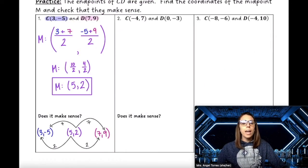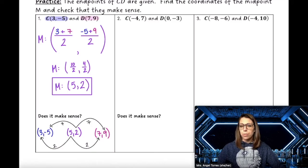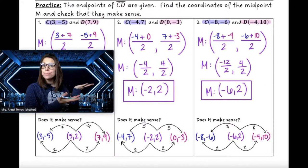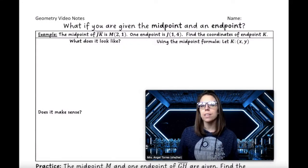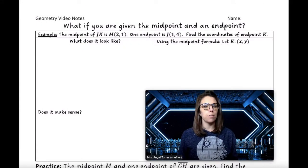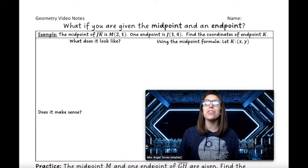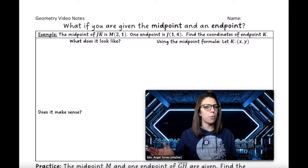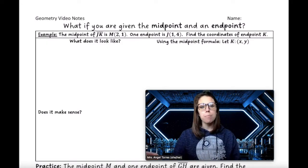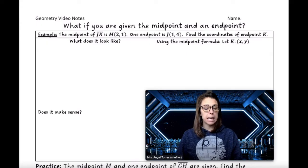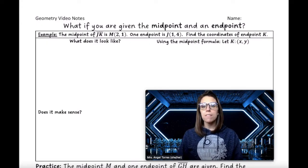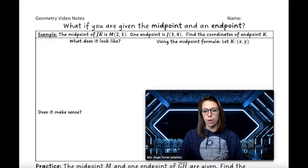Alright, it's your turn — go ahead and find the coordinates of midpoint M for number 2 and number 3, and see if it makes sense. In the second half of this video, we're going to look at a different type of question: what if you're given the midpoint and one of the endpoints, and you're asked to find the other endpoint? In this example, the midpoint of segment JK is M at (2, 1), and one of the endpoints is at (1, 4). Find the other endpoint.